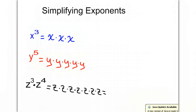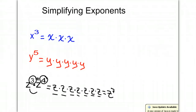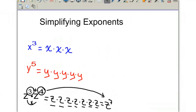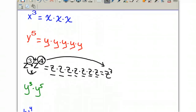Now if we want to simplify this, we can count how many there are: 1, 2, 3, 4, 5, 6, 7 z's. So this is actually z to the power of 7. What we are doing is we are adding the exponents when we multiply, so when we multiply the two z's together, we add the exponents to get z to the power of 7.